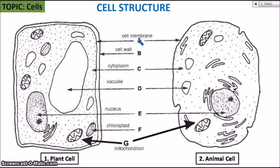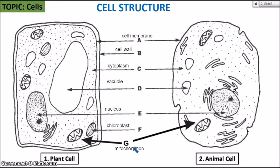Let's quickly recap: the cell membrane provides the barrier for the cell and controls what enters and leaves. The cell wall offers structure, shape, and support to the plant cell only. The cytoplasm is the jelly-like fluid making up most of the inside of the cell, where all other organelles are embedded. The vacuole stores mostly water and sugars. The nucleus is where you have the genetic information in the form of chromosomes. The chloroplast is the site of photosynthesis and the mitochondria is the site of respiration.